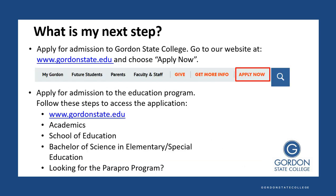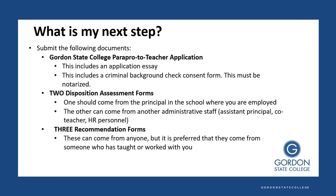Now that you know what you need to do, how do you get started? The first step is to apply to the college — go to www.gordonstate.edu, and in the top right, choose Apply Now. Then you want to apply for admission to the education program itself. To get to that application, go to our website, choose Academics, then School of Education, Bachelor of Science in Elementary Special Education, and look for the ParaPro program. On that site, you'll see a link to the required documents, the first being the Gordon State College ParaPro to Teacher application — a PDF form you can fill out online that includes an application essay. It also includes a criminal background check consent form that must be notarized.